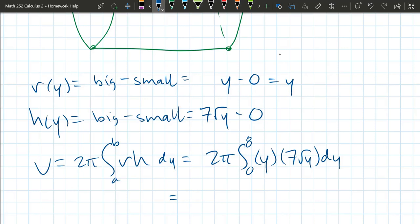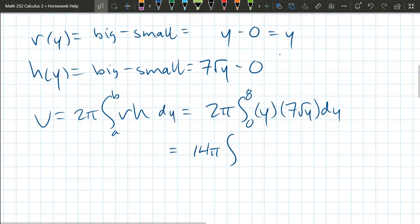We could bring the 7 out front. So it's 14π integral. We have y times √y. √y is a half power. So it's y to the first power, which you should never write, times y to the half power. So you add those. You have y to the 3/2 power.